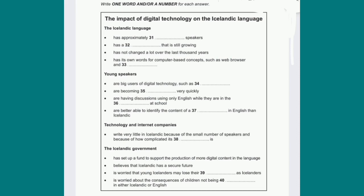Of course, this is happening to other European languages, too. But while internet companies might be willing to offer, say, French options in their systems, it's much harder for them to justify the expense of doing the same for a language that has a population the size of a French town, such as Nice. The other drawback of Icelandic is the grammar, which is significantly more complex than in most languages. At the moment, the tech giants are simply not interested in tackling this.